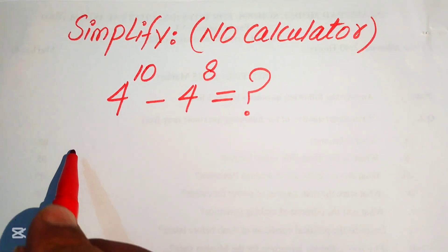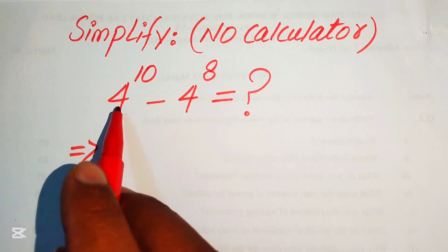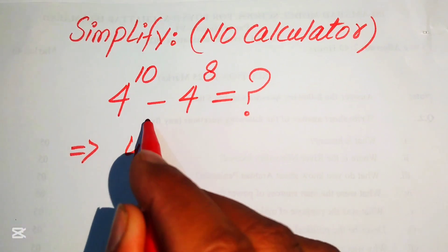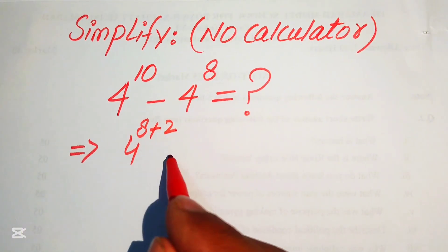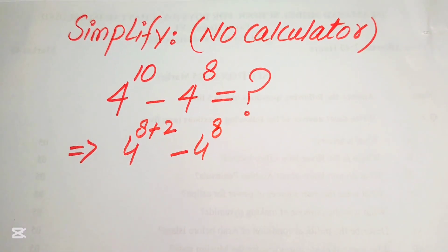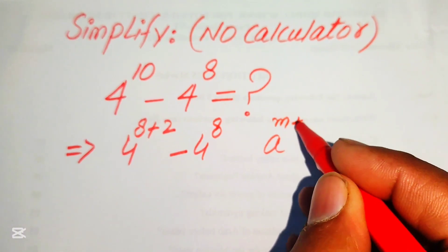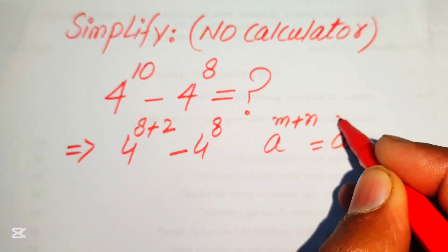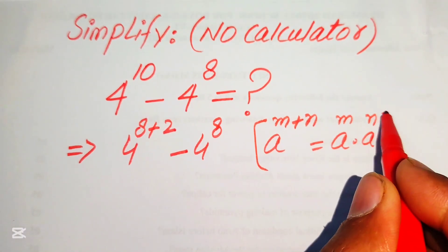The very first step is to focus on the base of this term. We have 4 to the power of 10, and we rewrite it as 4 to the power of 8 plus 2 — breaking 10 as 8 plus 2 — minus 4 to the power of 8. After that, we apply the exponent law: a to the power of m plus n equals a to the power of m multiplied by a to the power of n.